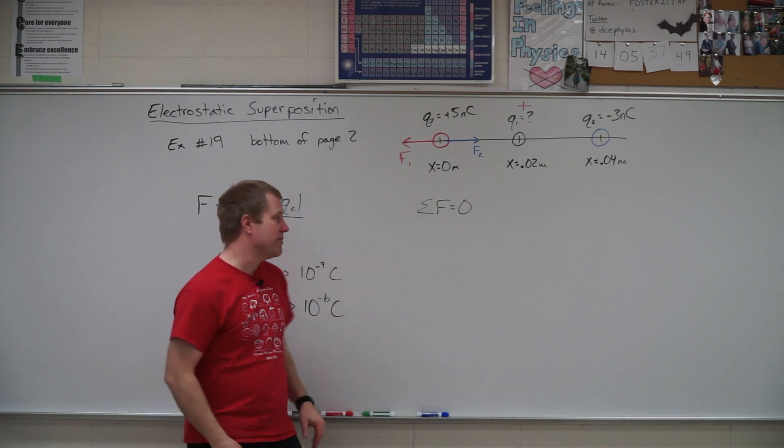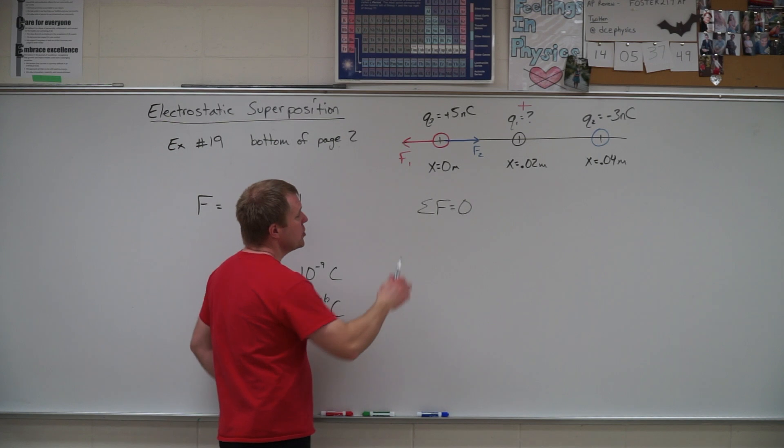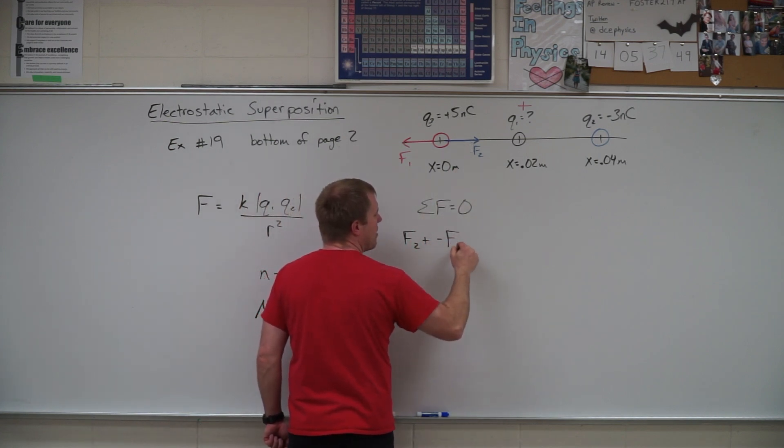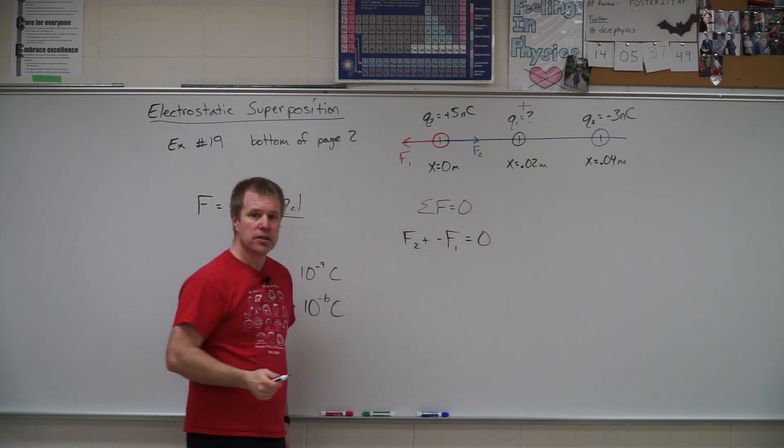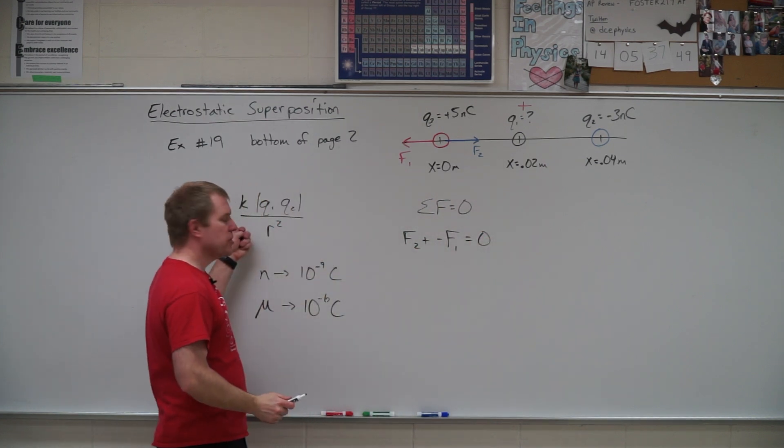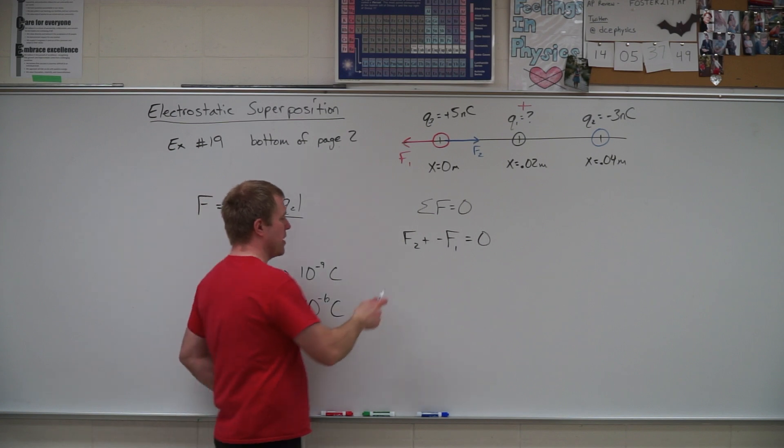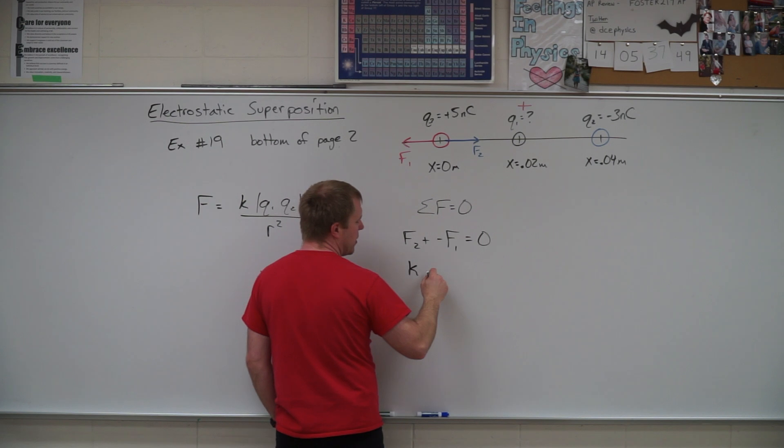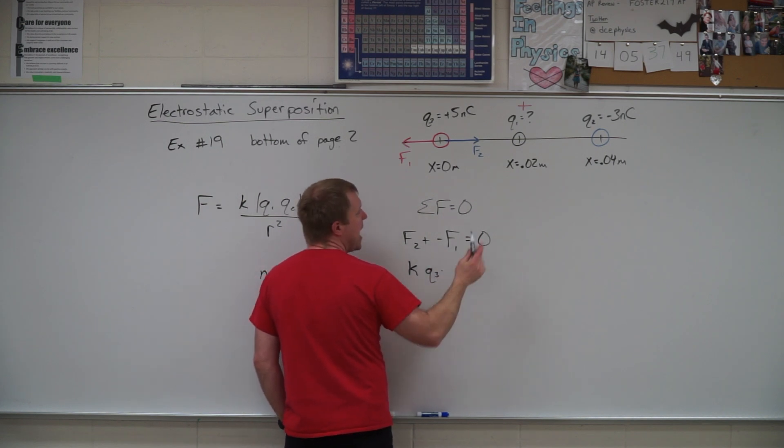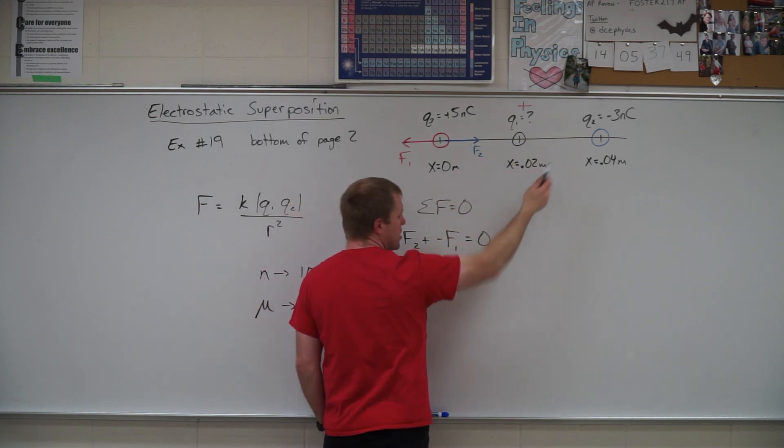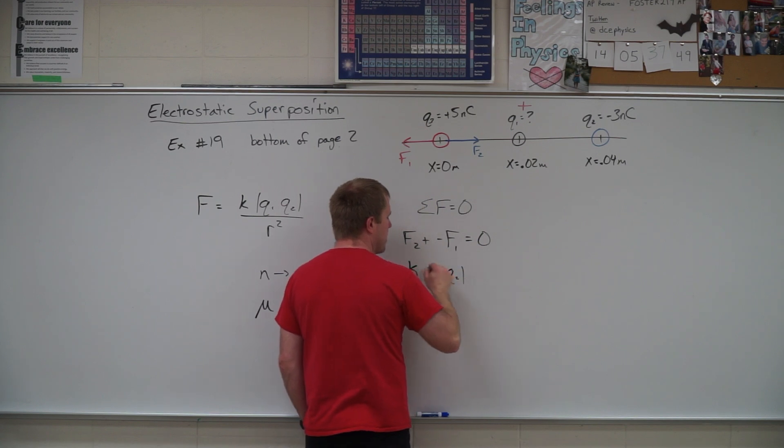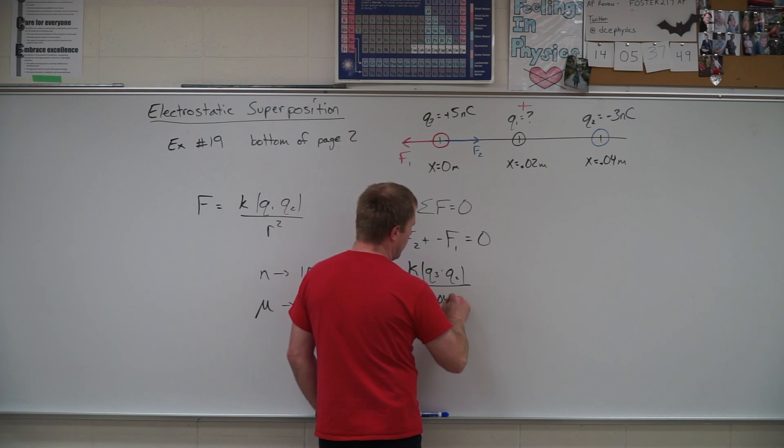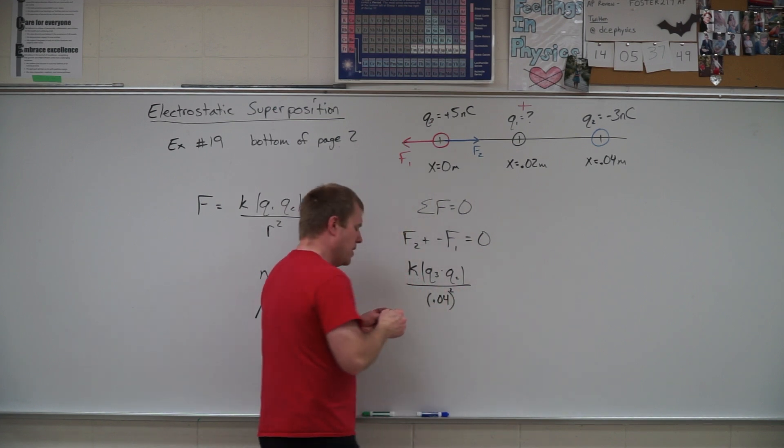Now to find the magnitude of that charge, we set up our equation. So I have f2 in the positive direction plus a negative f1 equals zero. We're now going to make our substitution using our force equations. So f2 is going to be k times the two charges involved, so I have q3 and f2 is going to be q2. Those are absolute value signs divided by the distance between them squared, which is 0.04 squared.